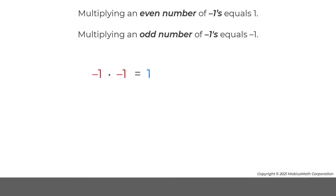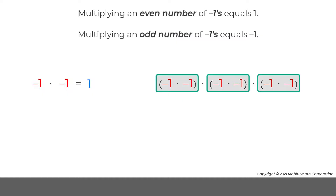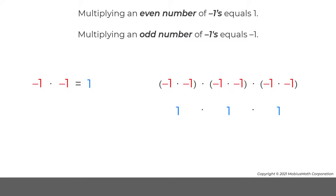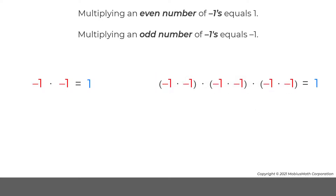This fact can be applied to evaluate the following expression, where an even number of negative 1's are multiplied. Notice that multiplying each pair of negative 1's equals 1. Then, repeatedly multiplying by 1 also equals 1. So, the product of an even number of negative 1's equals 1.